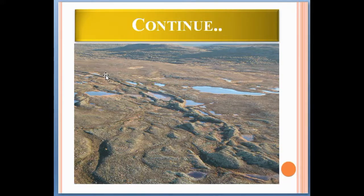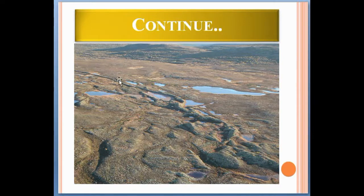This type of landform marks that some millions of years back, this area was actually drained by a river or stream flowing below the glacier. After that, the glacier melted and the landform was formed.